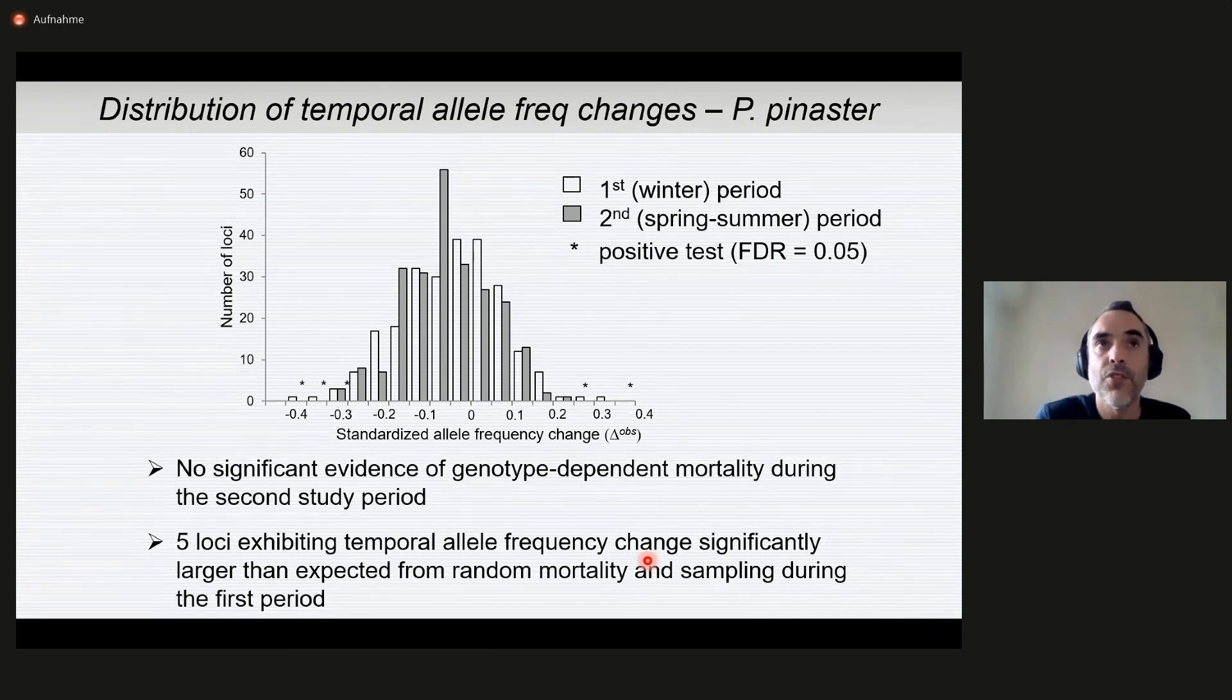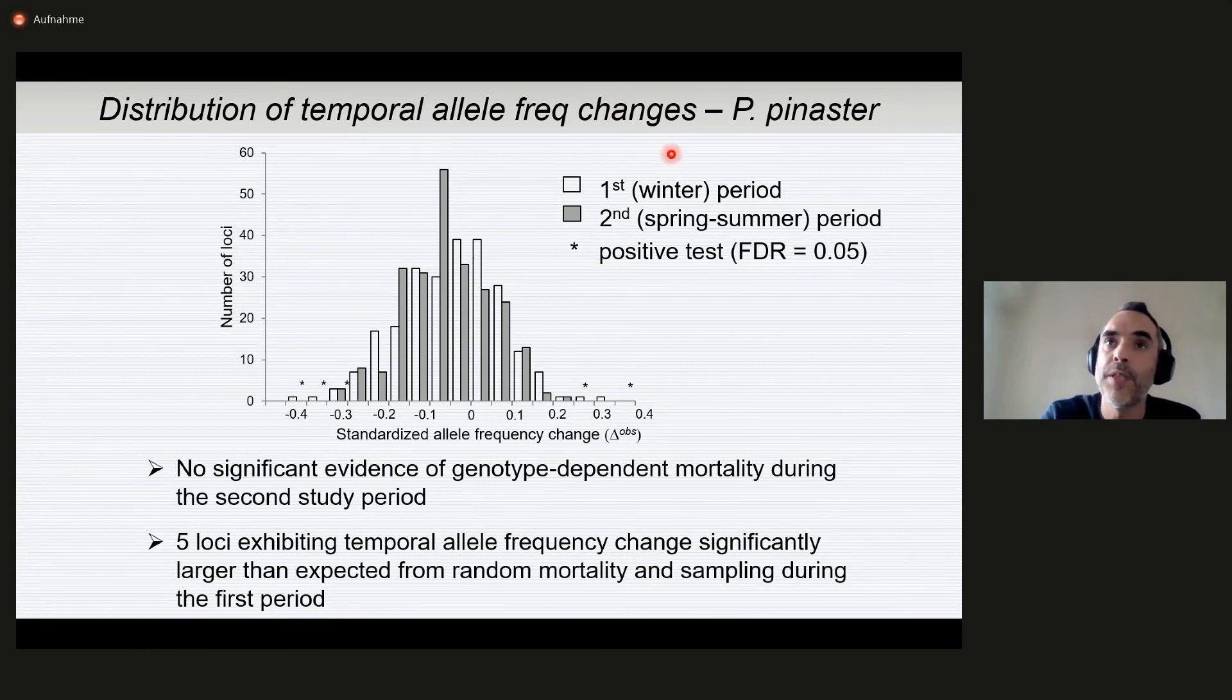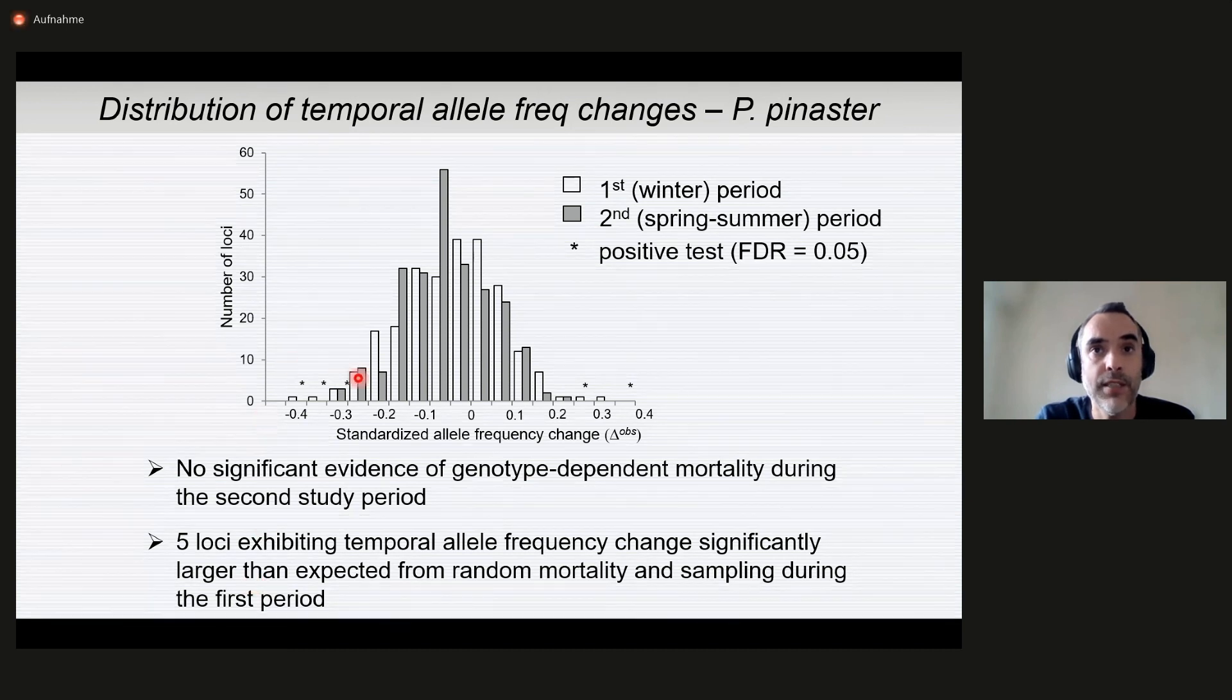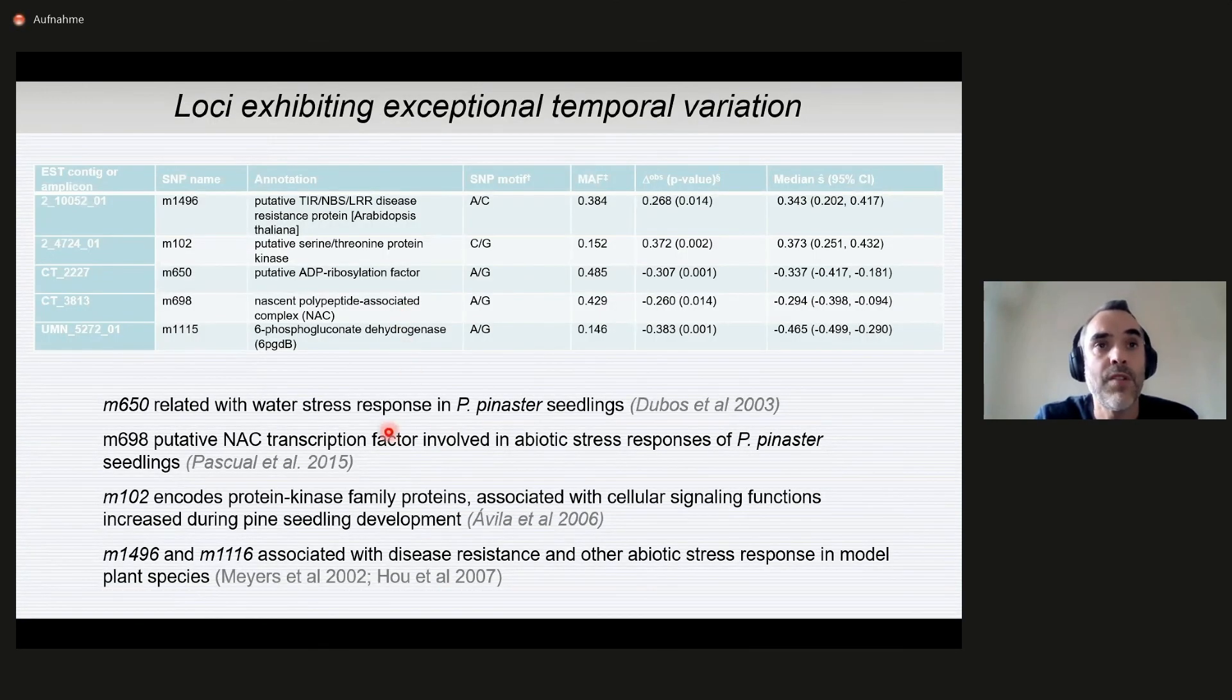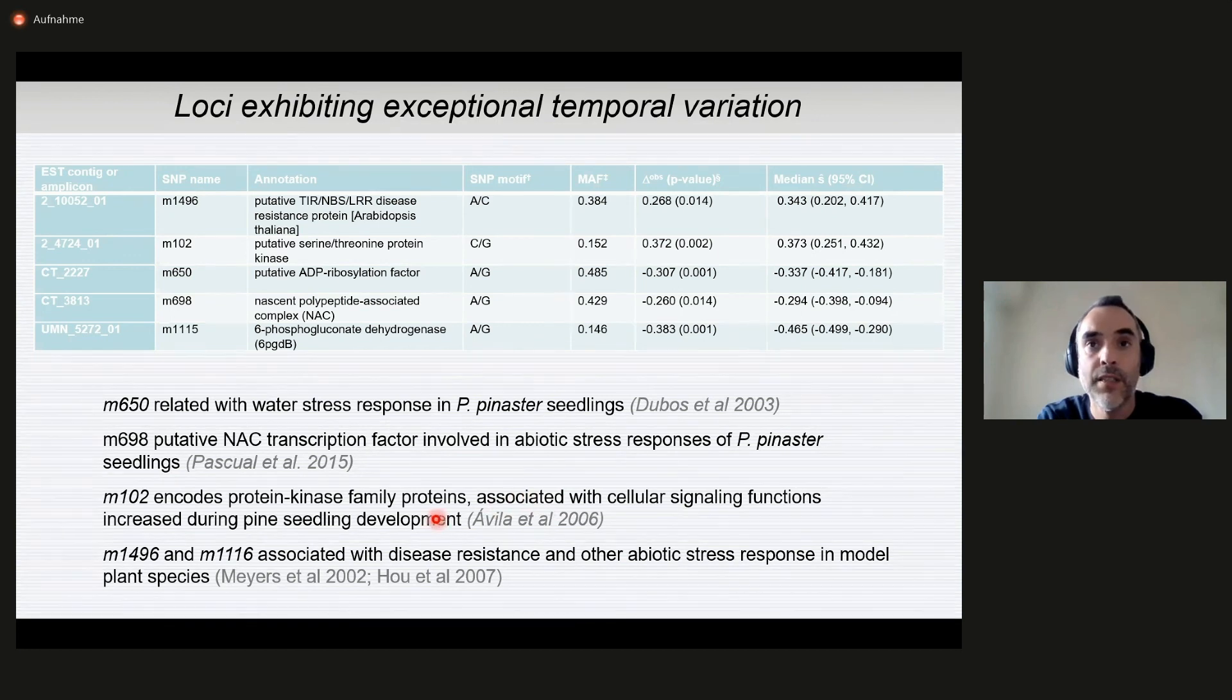What you can see here is the distribution of temporal allele frequency changes for two separate periods. The first one, winter period after seedling emergence and the later spring to summer period. What we found is that there was no significant evidence of genotype dependent mortality during the second study period in gray, most likely due to the small sample size. But we found five loci that exhibited temporal allele frequency changes that were significantly larger than expected from random mortality and sampling alone. These five loci were related not surprisingly with some functions since we used candidate genes. But interestingly, they were related mostly with seedling fitness traits associated with water stress and other abiotic stress responses and with some basic cellular signaling function.